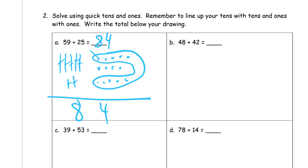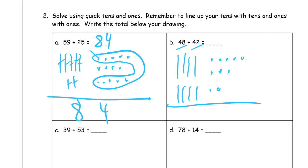Forty-eight and forty-two. One, two, three, four, five, six, seven, eight ones. Forty-two is one, two, three, four tens and one, two ones. Now if I look at this — here's an eight, and there's an eight and there's two more. So I know all together this is going to make a ten.